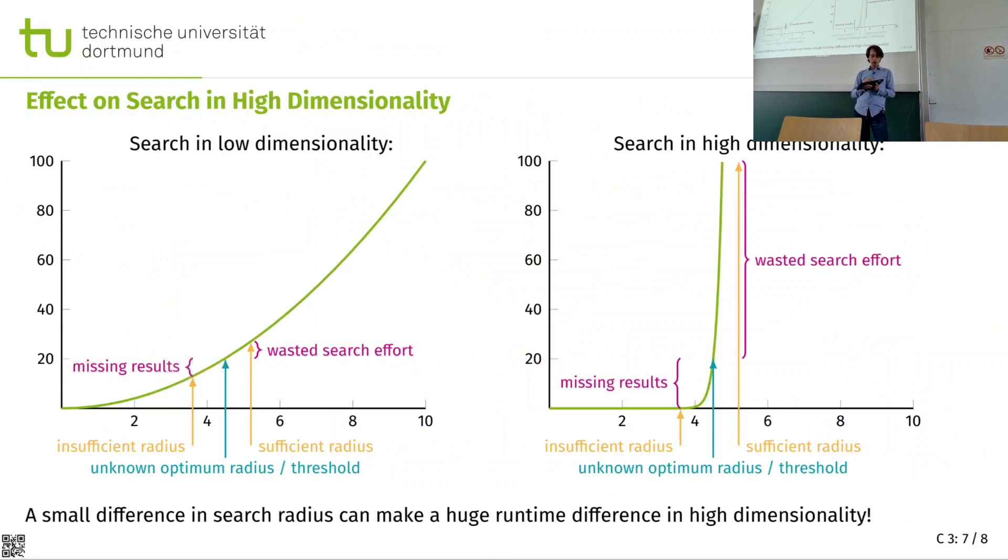If we had chosen a slightly larger radius, we may have looked at some 26, 20, maybe 30 objects. That means we have wasted search effort. We have loaded data. We have computed distances for data points that we didn't need. Because we only needed 20. But that is just a certain cost overhead that we may need to pay for search. That is the behavior in low dimensional spaces.